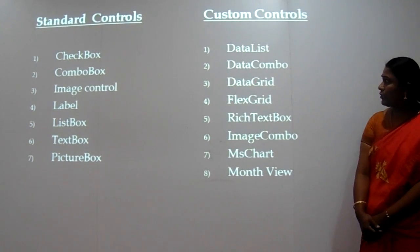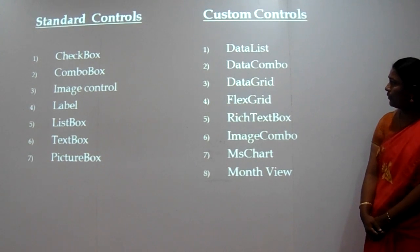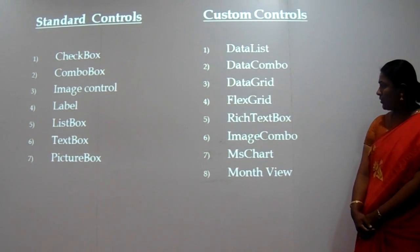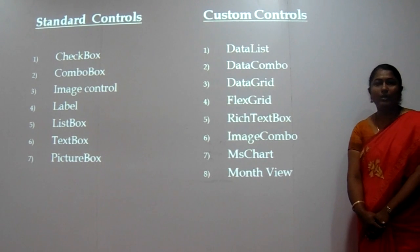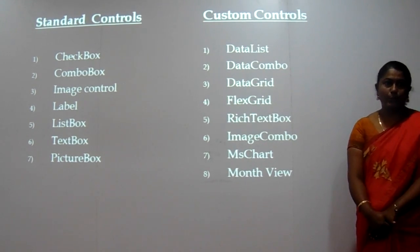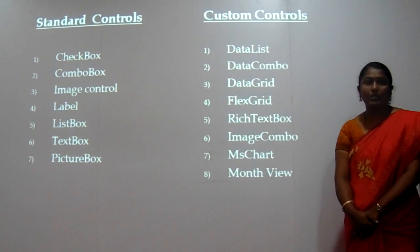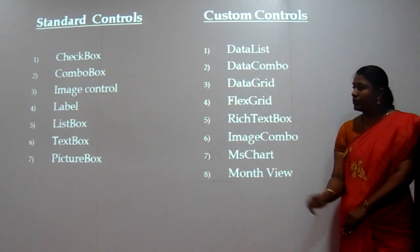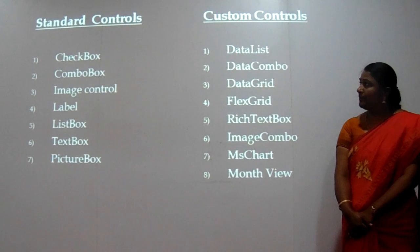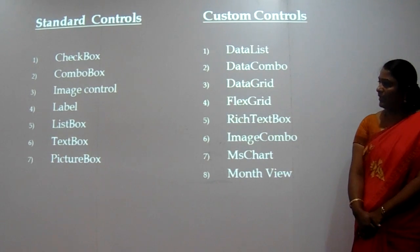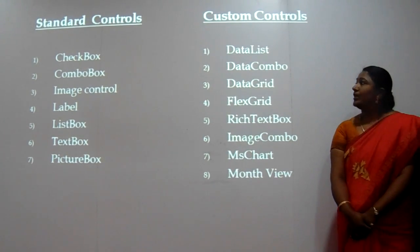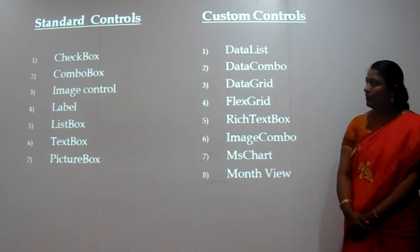Some custom controls are: data list, data combo, data grid, flex grid, rich text box, image combo, and MS chart. For these, we have to choose from the components window, because these are all custom controls. To do that, we have to right-click on the toolbox, select components, then choose the control.